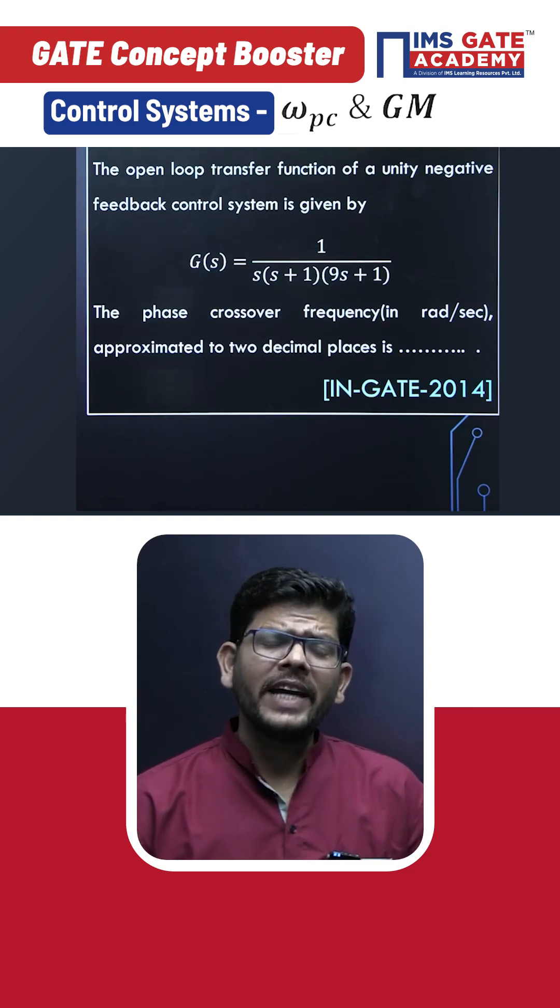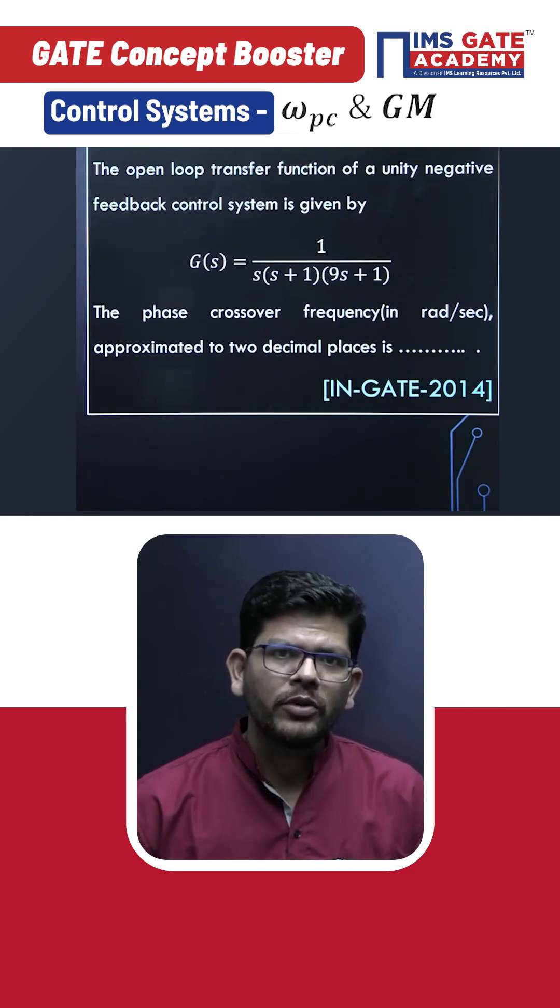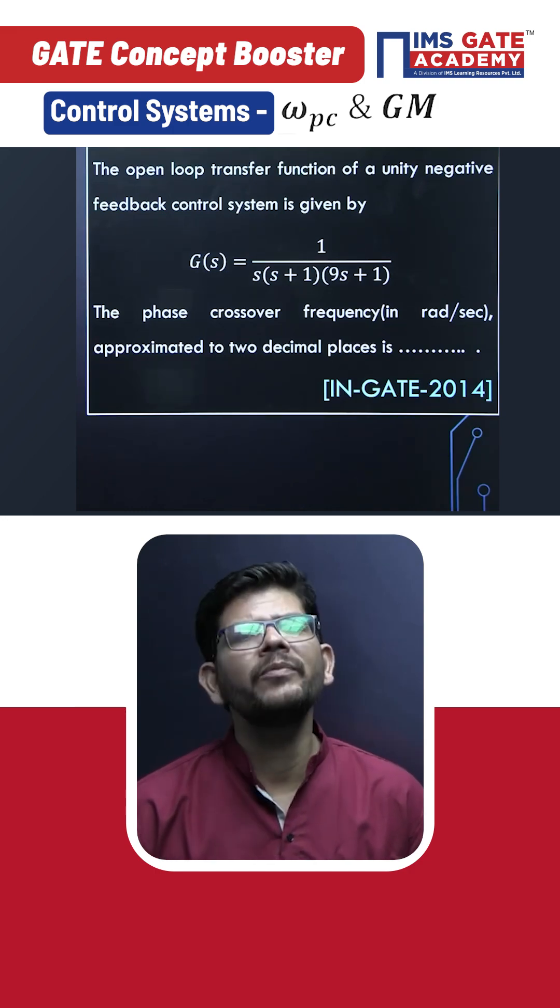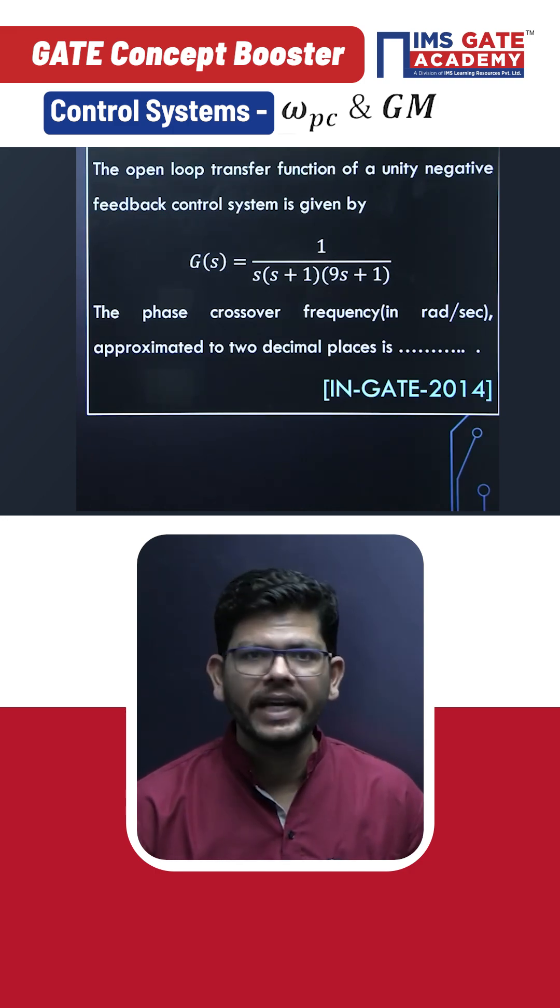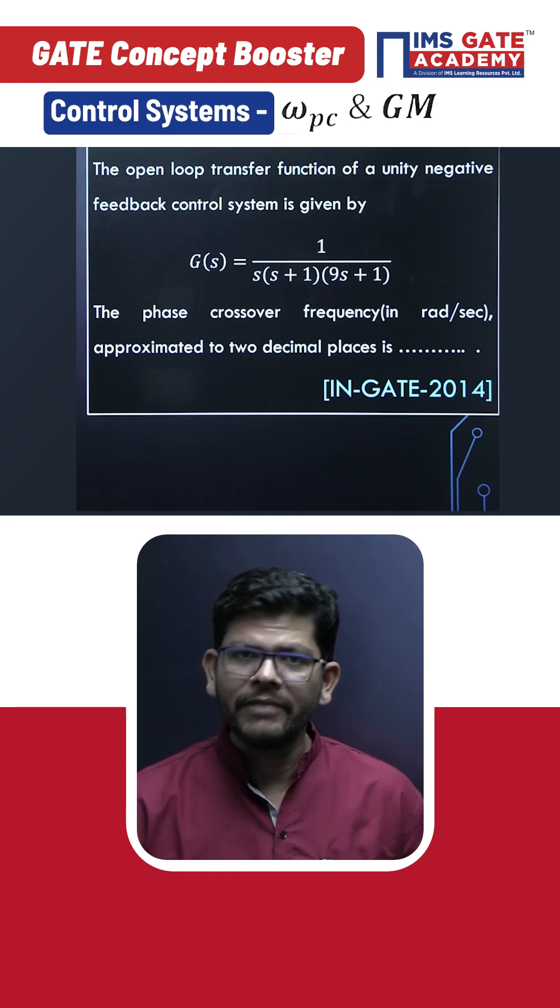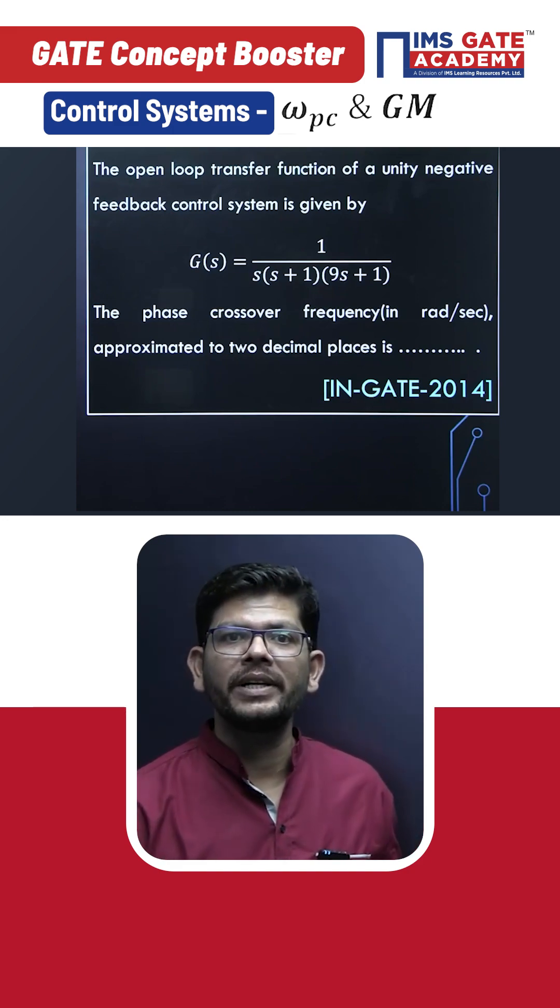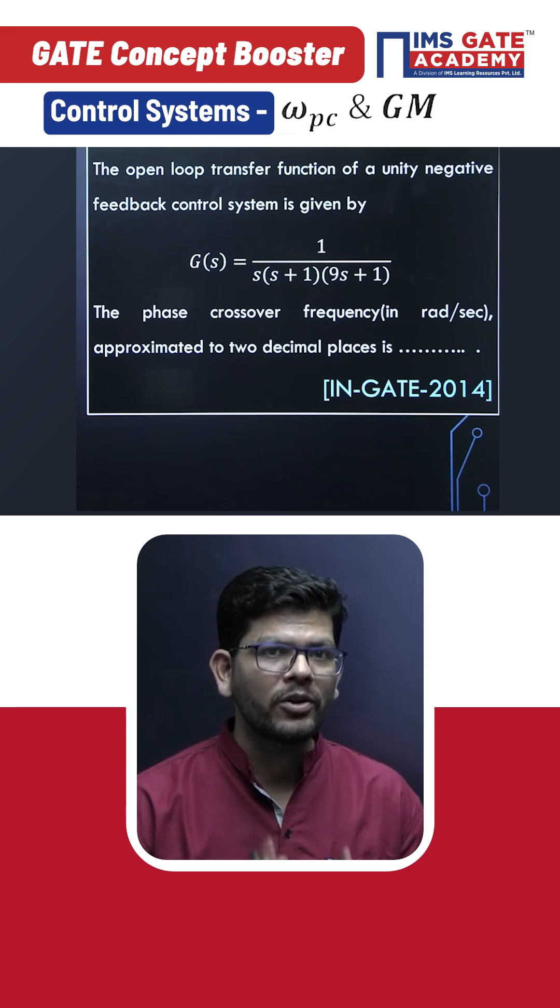When we have to calculate the phase crossover frequency and gain margin in any control system question, we normally think it's a very calculative process, isn't it? Even though we'll get the answer if asked such a question, we think it's going to take a lot of time, right?